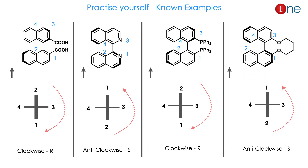I have given some examples to practice: the first is an acid, the second is a heteroatom-containing binaphthyl, the third is BINAP, and the fourth is a side-substituted binaphthyl. You have to apply the same viewing angle with groups 1 and 2 on the front in the vertical direction. If you work through them: the first gets R, the second gets S, the third is R, and the fourth is here for you to find. You must master these by practicing the examples.